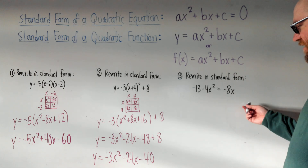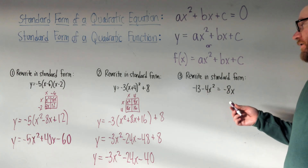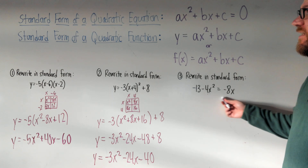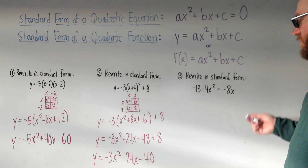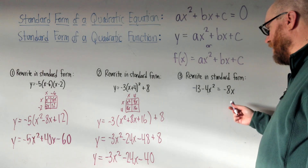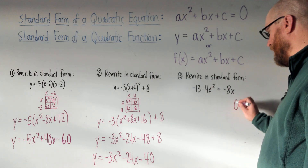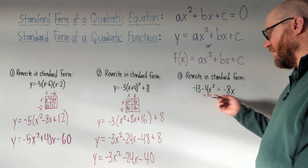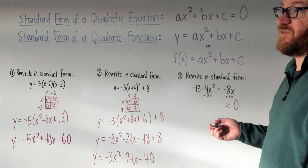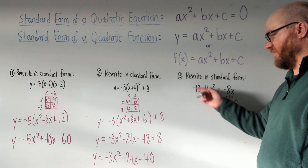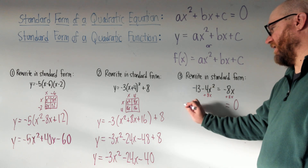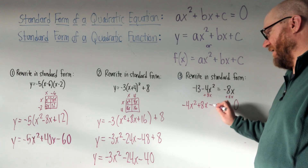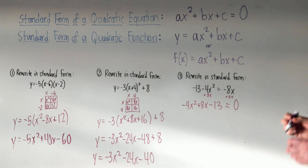Our last question has all the pieces, they're just out of order. Standard form means everything on one side. This one doesn't have a y — it's just an equation, which means we want it equal to zero. So let's get everything on the left and make it equal to zero by adding 8x to both sides. Changing the order, keeping signs properly: negative 4x squared is first, positive 8x is second, and minus 13 is third. That is standard form.